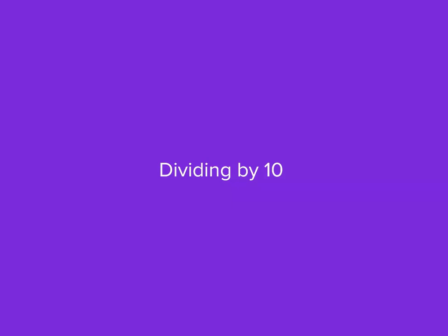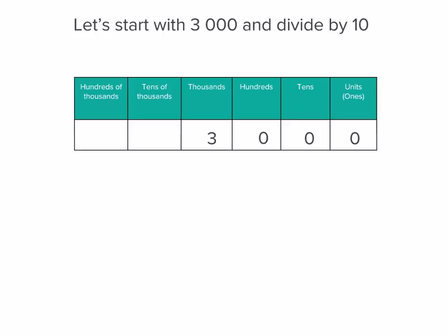What about dividing? Well, guess what? Division's like the opposite of multiplication. So let's start with 3,000 and divide by 10.